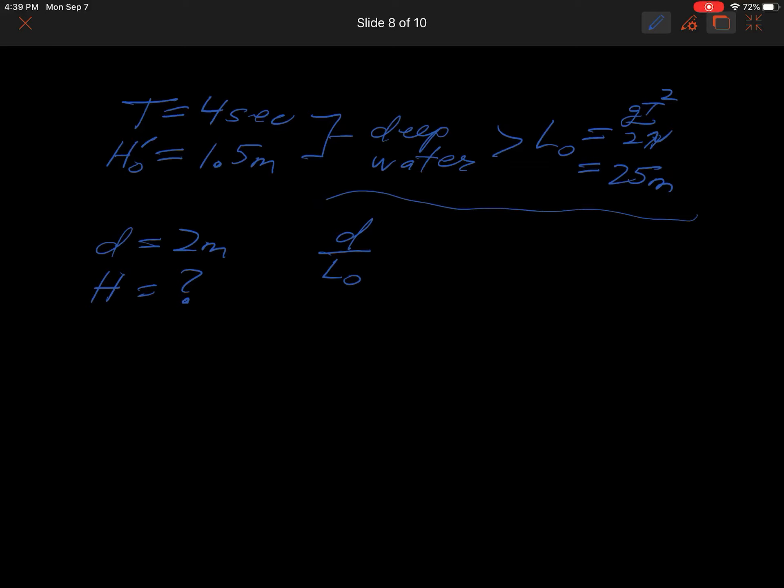This is our onshore location down here. So we calculate this ratio: two meters is the onshore depth and we divide by the deep water wavelength, 25 meters. The ratio is about 0.08.